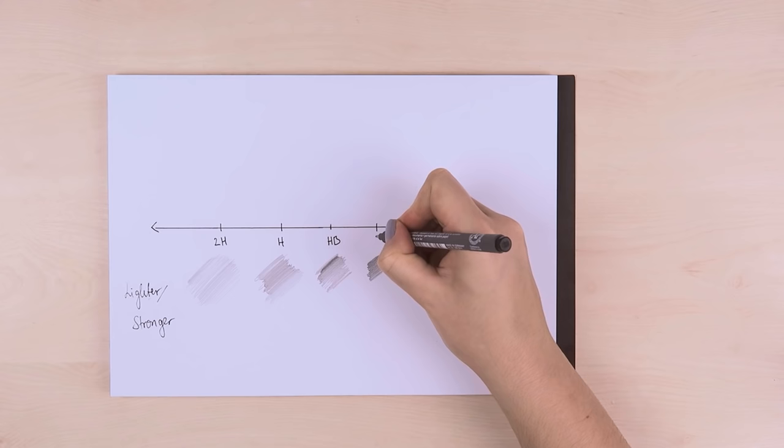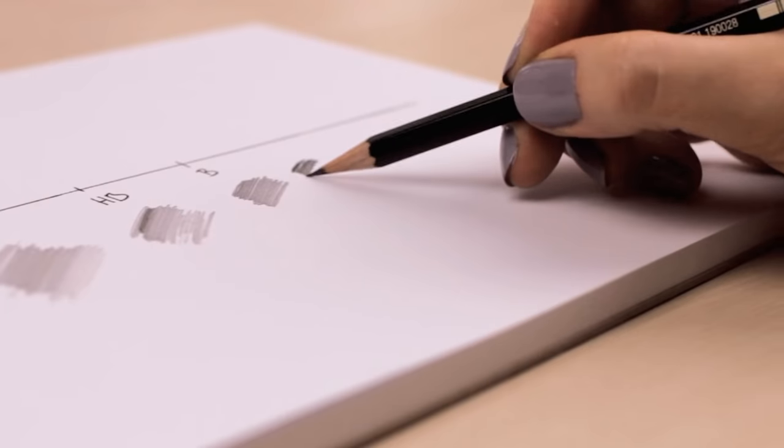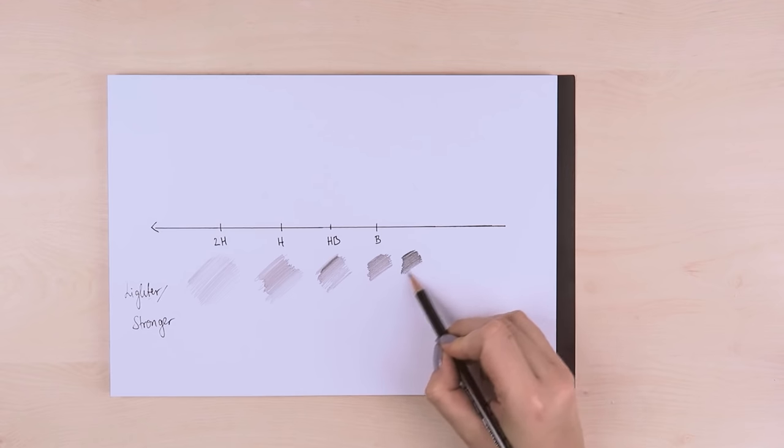B pencils, on the other hand, are different. The higher the number of the B pencil is, the darker and softer the pencil becomes.